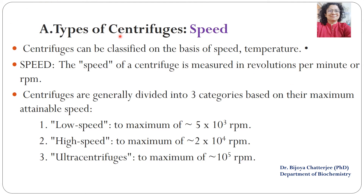Classification of centrifuges is based on different factors. The first classification is based on speed, measured in revolutions per minute (RPM). Centrifuges are divided into three categories: a low speed centrifuge with maximum speed around 5,000 RPM; a high speed centrifuge with maximum speed of 20,000 RPM; and an ultracentrifuge with speed around 1,00,000 RPM (10 raised to the power 5).